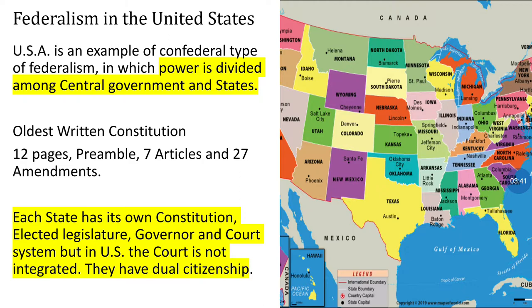This constitution came into force in 1789 and has only seven articles. It is such an old constitution, and so far only 27 amendments have been made to it.